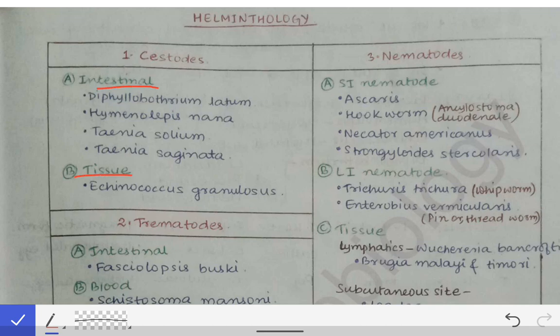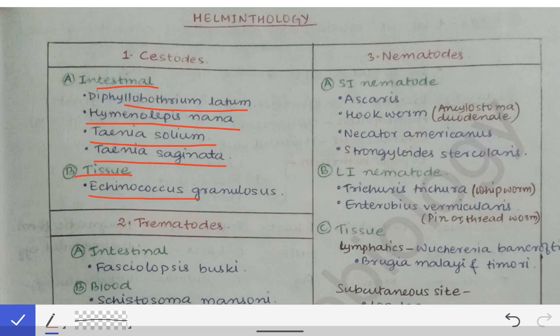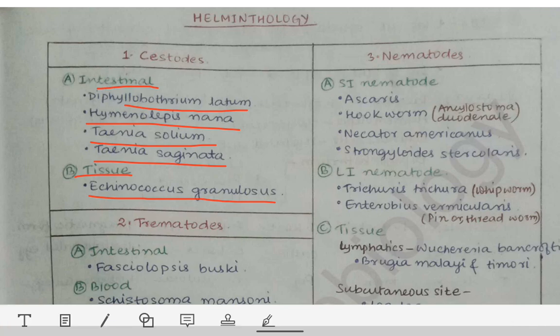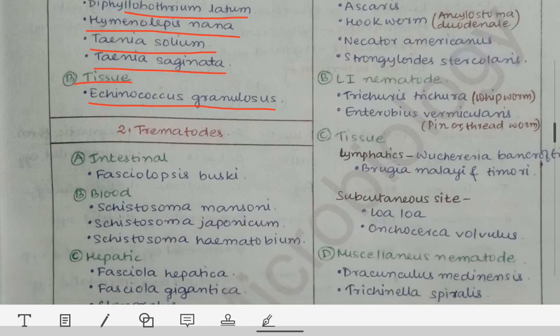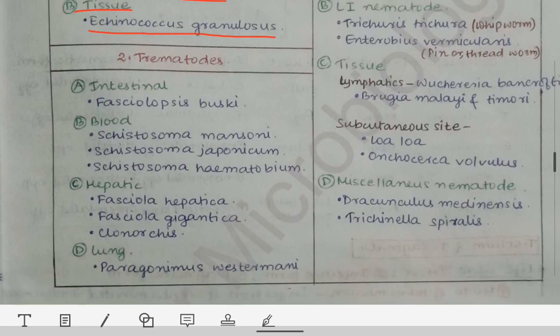The cestodes which infest the intestine are Diphyllobothrium latum, Hymenolepis nana, Taenia solium, and Taenia saginata. While in tissues, the cestode which is infested in the tissues is Echinococcus granulosus. That is all about the classification of the cestodes.